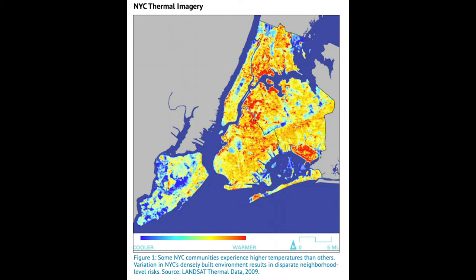Within the five boroughs of New York City, we experience different urban heat island intensity depending on which neighborhood we live in. This graph shows the surface temperature in New York City. As you can see, there are areas with high surface temperatures and areas with low surface temperatures. Areas near a park or with more vegetation tend to have lower surface temperatures, leading to smaller urban heat island intensities.